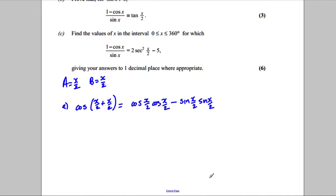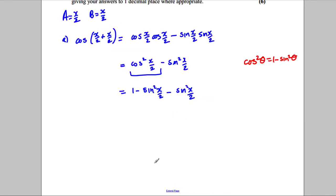Okay, and that would be equal to cos squared X over 2, subtract sine squared X over 2. And I know that cos squared of anything is 1 subtract sine squared of an angle. So I could replace this here by 1 subtract sine squared X over 2. I've still got my sine squared X over 2.